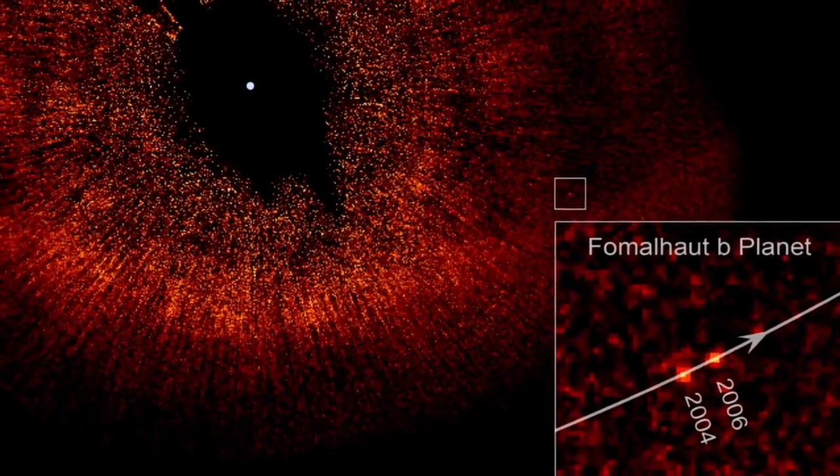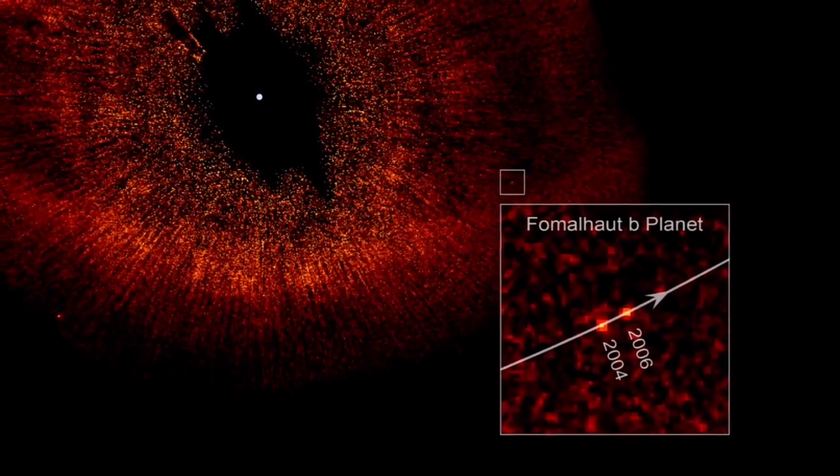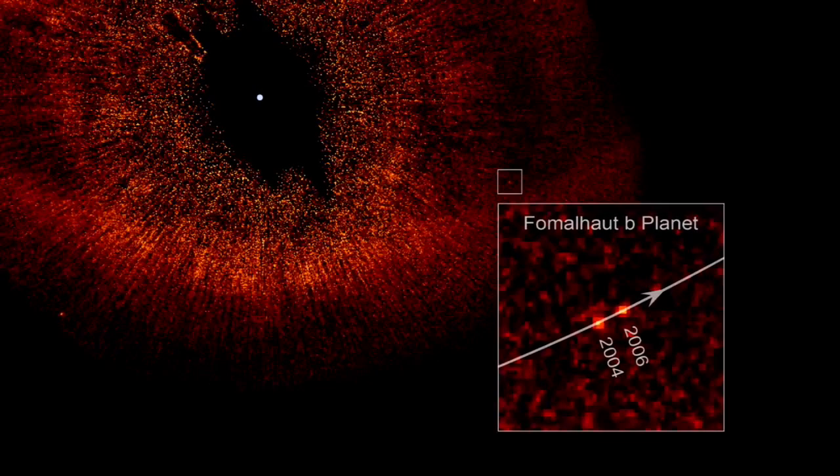This time Hubble has given us a rare direct image of an extrasolar planet, and what's more, the first in visible light, the type our eyes naturally see.